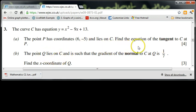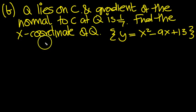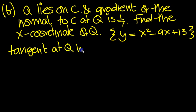So the gradient of the normal to C at Q is 1/7. OK, so I've written that out. Find the x-coordinate of Q. So if the normal to C has a gradient of 1/7, then the tangent at Q has a gradient...